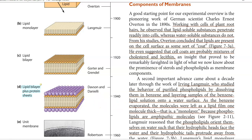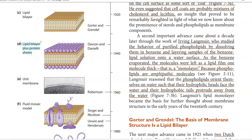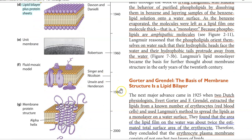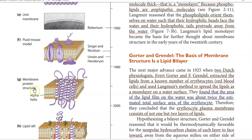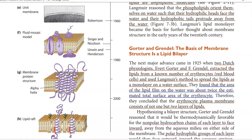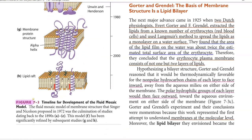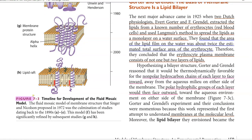I am not mentioning the year as the contribution becomes more important than the year. Then the unit membrane model, which was proposed by Robertson. Then the fluid mosaic model, which is an important model proposed by Singer and Nicholson. Then some more details about membrane proteins were first identified through Unwin and Henderson regarding the alpha helix arrangement. The last model currently describing membrane functioning is referred to as the lipid raft model. We will see the explanation for each model now separately.